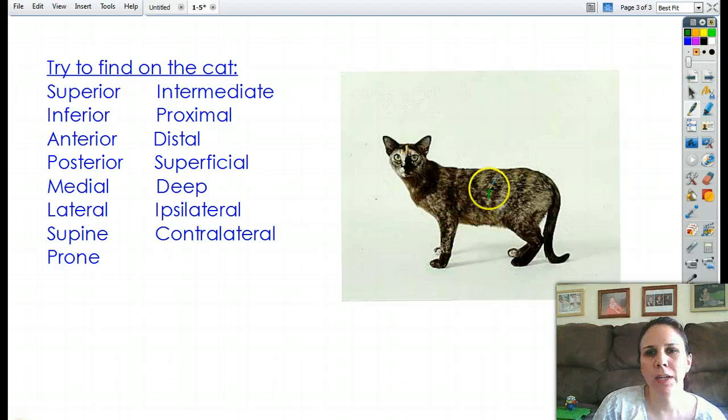Superficial would be like his fur or anything on his skin would be something superficial. Deep. If we were to make a huge incision in our kitty and see some insides, that would be a deep incision. And then the last one is ipsilateral and contralateral.